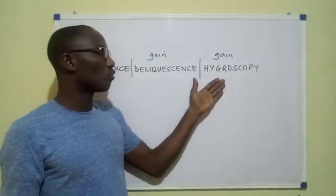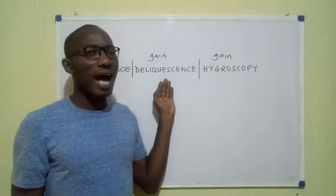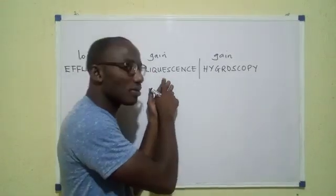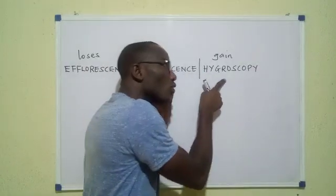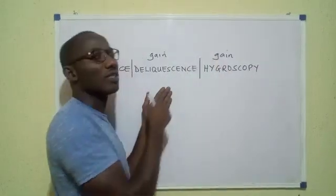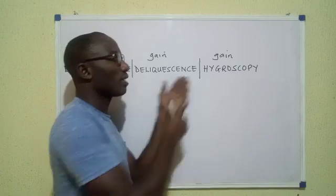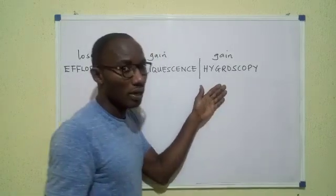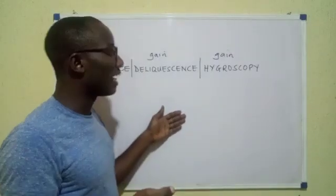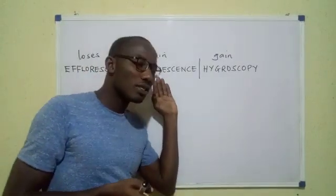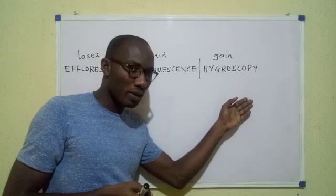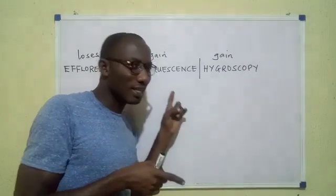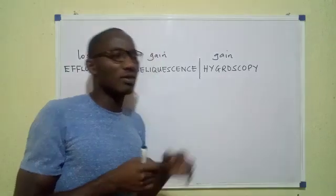But if the substance dissolves in the water to form a solution, we begin to describe the substance as deliquescent. A deliquescent substance is a hygroscopic substance that dissolved in the water it absorbed, whereas a hygroscopic substance that did not dissolve in the water absorbed remains hygroscopic. It therefore follows that all deliquescent substances are hygroscopic, but not all hygroscopic substances are deliquescent — only the ones that dissolve in the water.